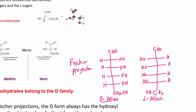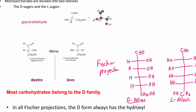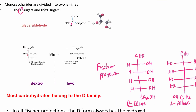We can divide monosaccharides into two families: the D and the L sugars. D-glyceraldehyde is the right-handed form, also known as dextro; L-glyceraldehyde is left-handed, also known as levo. The rule is: look at the OH group on the chiral carbon furthest away from the carbonyl carbon. If it is on the right, that's the D form; if it's on the left, that is the L form.